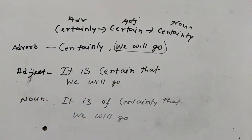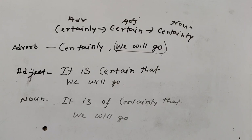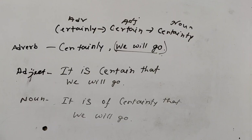There are three rules. Number one: adverb to adjective and noun form — straightforward. Number two: for adjective, replace the adverb with 'it is' plus adjective form plus 'that' plus the sentence. Number three: for noun, replace the adverb with 'it is of' plus noun form plus 'that' plus the sentence. When using adjective and noun form, the simple sentence is converted into a complex sentence.